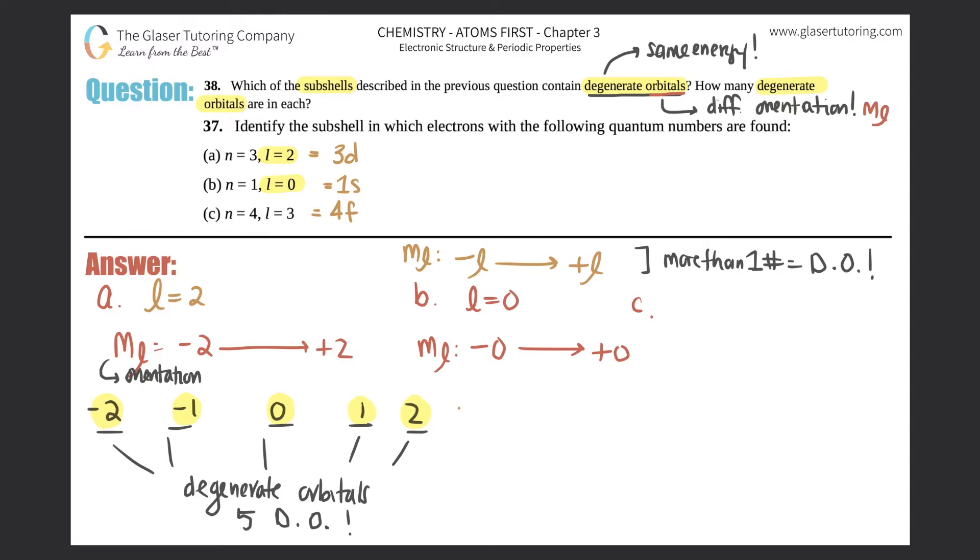Technically zero is not negative or positive, so this one would just be a zero. I only have one number, so can these be degenerate? No. So this is not degenerate orbitals - DO - because there's only one orbital. There's literally one number here, so there's only one orbital. That's it, so there's one way, there's one orientation that you could draw this subshell.